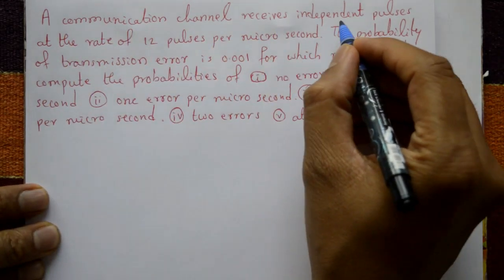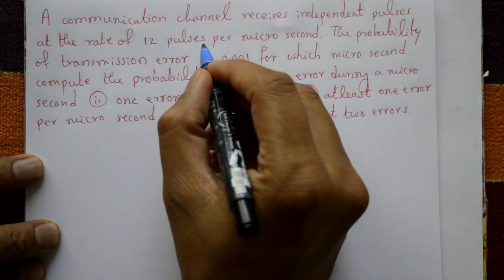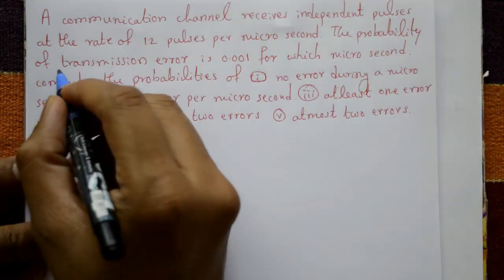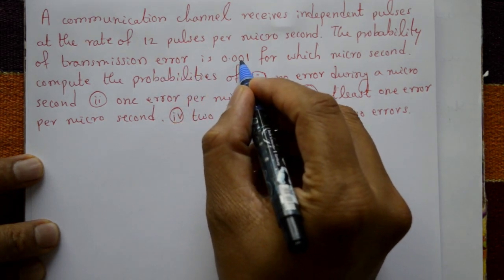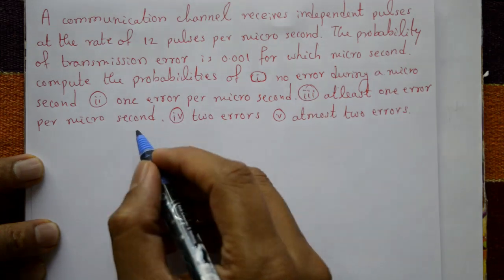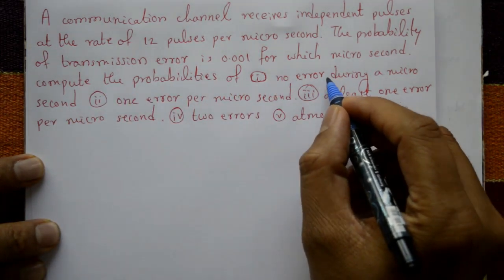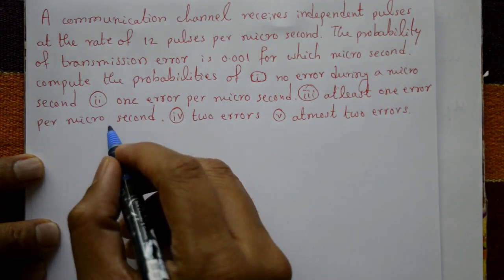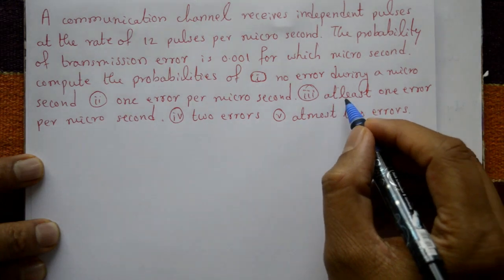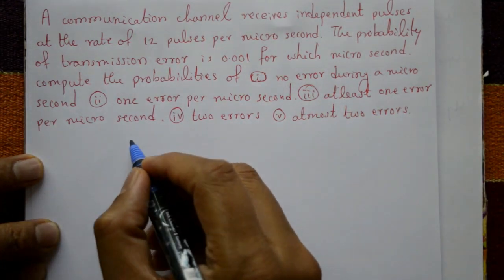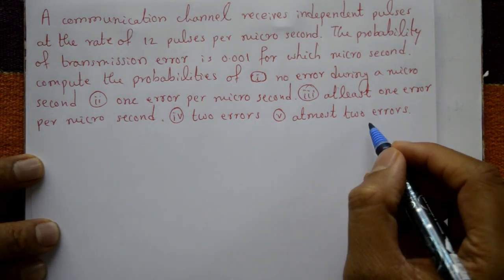A communication channel receives independent pulses at the rate of 12 pulses per microsecond. The probability of transmission error is 0.001 for each microsecond. Compute the probabilities of: case 1 - no error during 1 microsecond; case 2 - one error per microsecond; case 3 - at least one error per microsecond; case 4 - two errors; and case 5 - at most two errors.